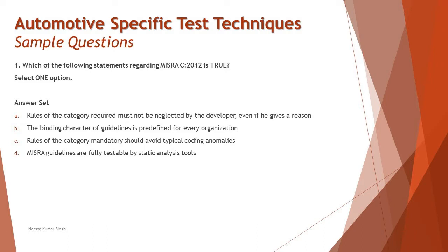Question number one: which of the following statements regarding MISRA C 2012 is true? Recall from the very first tutorial covering MISRA C 2012 — that standard helps determine how exactly testing can be organized. Option A states: rules of the category 'required' must not be neglected by the developer even if he gives a reason. That sounds unreasonable, because required guidelines may only be disregarded if the developer can provide a compelling reason. So option A is not correct.